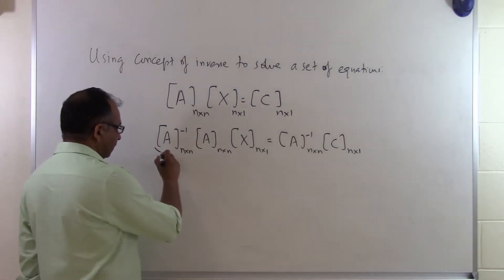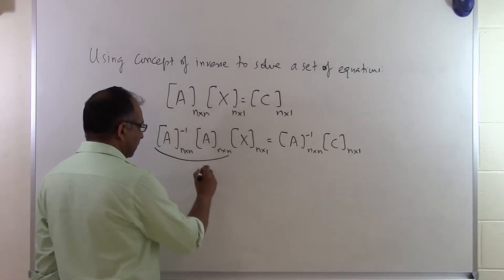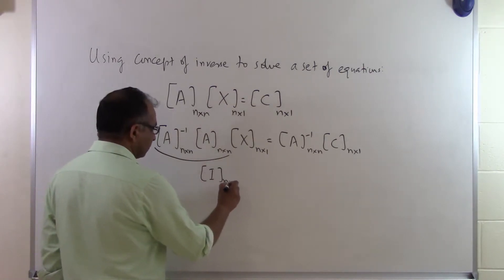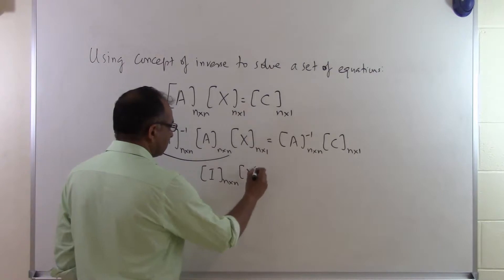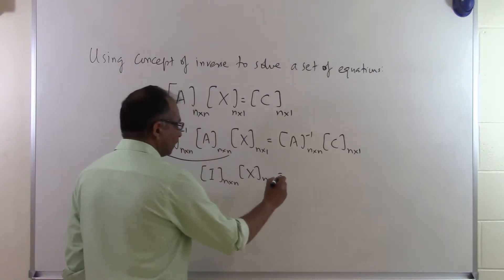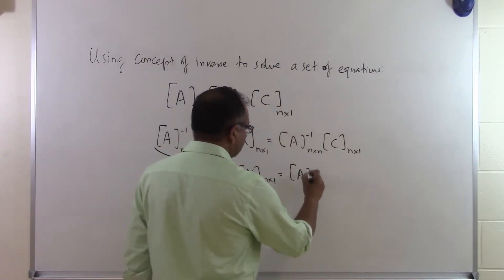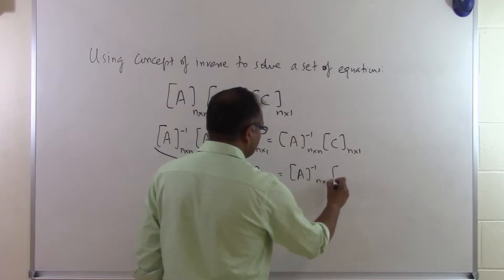But I know that the A inverse times A is nothing but the identity matrix. And this one is just A inverse times C.